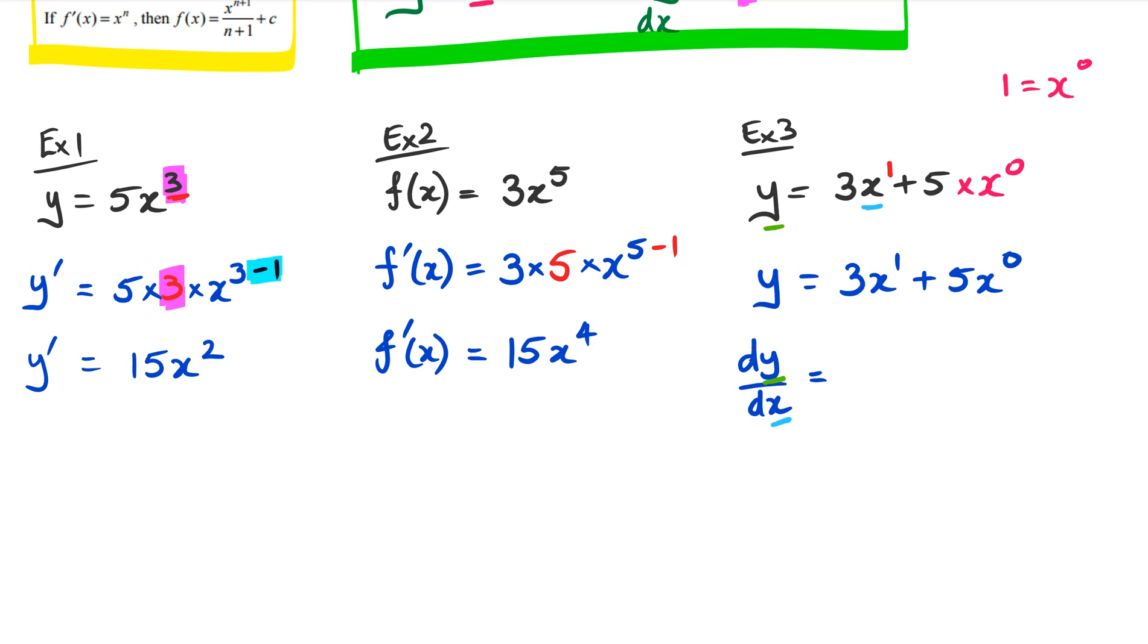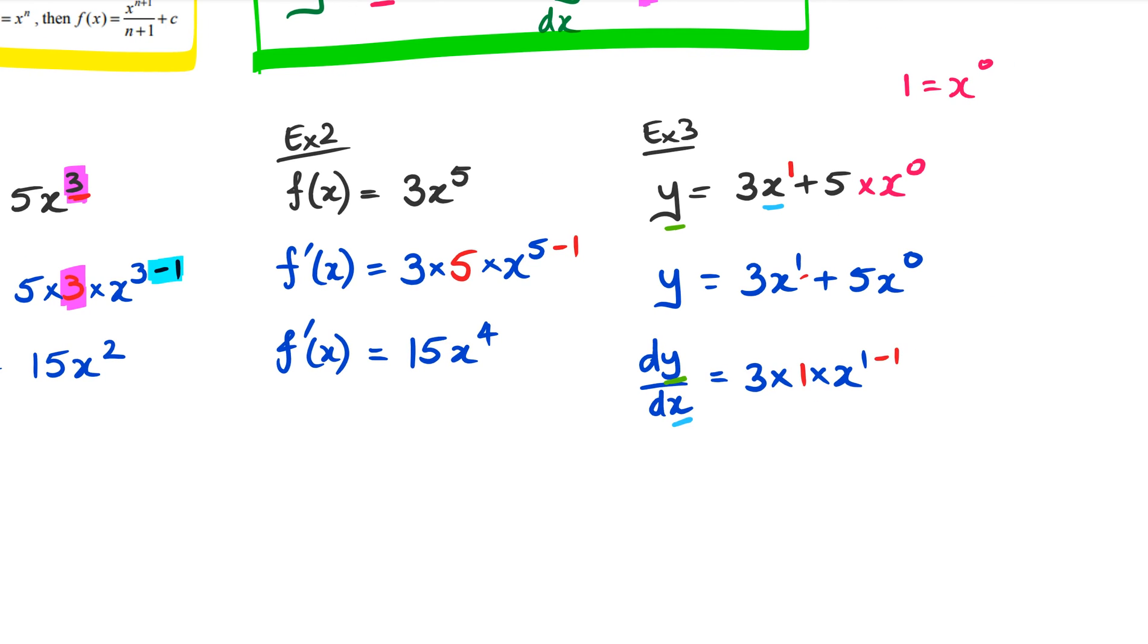So what I've got here is I've got 3 multiplied by the power, in this case, which is 1. So it's 3 times 1. And I've got multiplied by x to the power of 1, take away 1. Then I've got plus. I've got 5 times 0, which is the power for x. So it's going to be 5 times 0. 5 times 0 multiplied by x to the power of 0. And then, of course, we're going to take 1 away from the power.